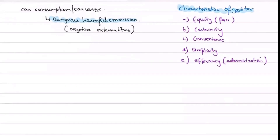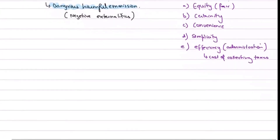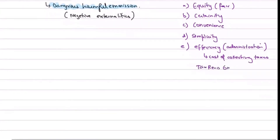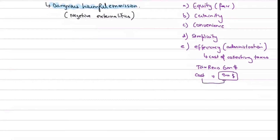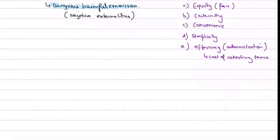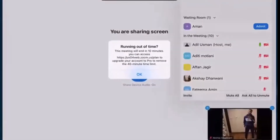Consider the cost of collecting taxes from firms and people. If the government is spending 9 million as a cost of collecting taxes but the tax revenue is only 6 million, then the government has a 3 million loss. There is no point in a tax system that is so administratively poor that the cost of collecting taxes exceeds the revenue actually collected.